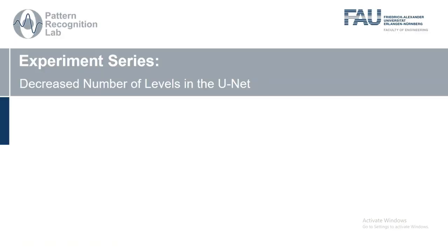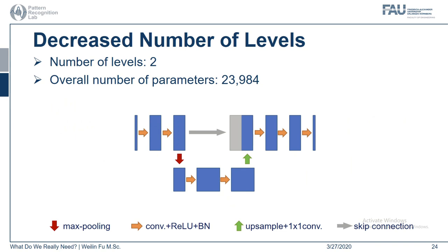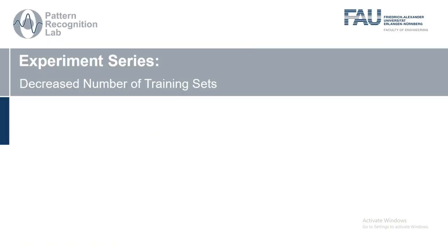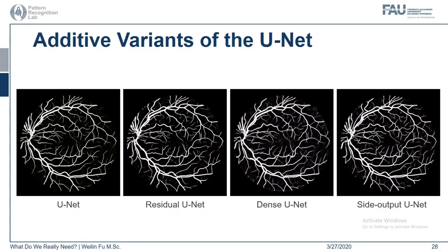Then we design an experiment series with a reduced number of UNET levels from 3, to 2, to 1, until it degenerates into a dense block. And finally, we reduce the number of training sets from 16 to 8, 4, 2, and finally 1. That's how we designed the experiments in this work, and now let's have a look at the corresponding results.